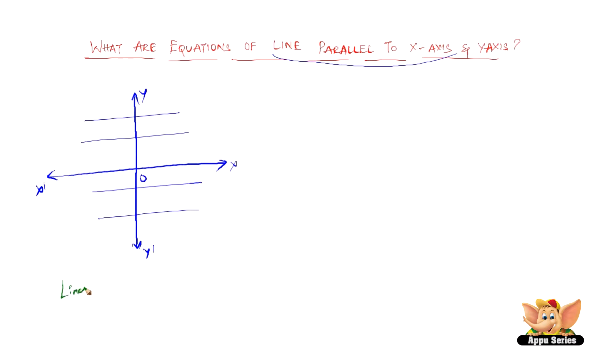These are lines parallel to x-axis. Coming to lines parallel to y-axis, it is again very simple. We have the y-axis and x-axis. Lines like these are parallel to the y-axis.